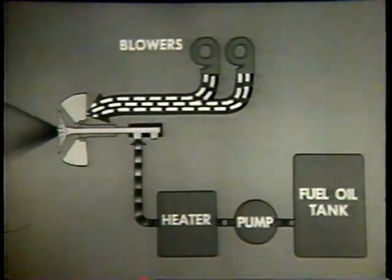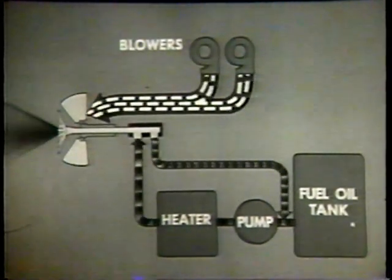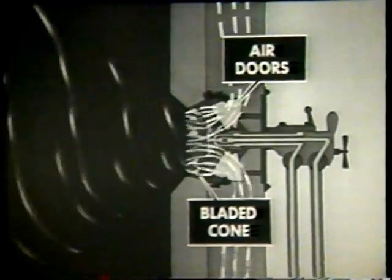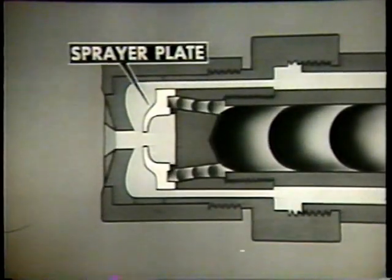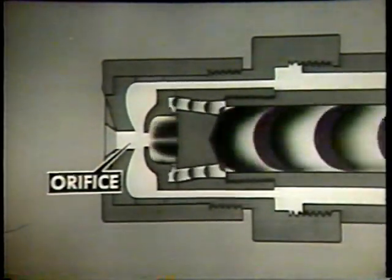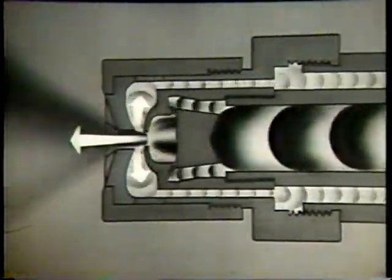In this type of burner, only part of the oil that goes through the burner is actually burned. The remainder returns to the fuel oil pump. Air doors and a bladed cone give the whirling motion to the air that enters the register to mix with the oil, as in the burner seen previously. The oil, heated and under pressure, is forced through the inner tube of the burner barrel to the sprayer plate, where the oil is rotated in the whirling chamber. The oil leaves through the sprayer plate orifice. Centrifugal force sends some of the oil into the return line and back to the fuel oil pump. The remaining oil continues through the orifice into the furnace.